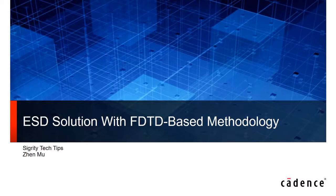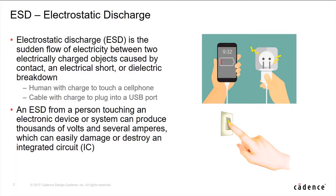Thank you, Gary. In today's presentation, we will discuss the ESD simulation solution using the FDTD methodology in Sigrity tools. What is ESD? It is electrostatic discharge. It can send sudden electricity flow through objects with electrical charges. How does it happen? A person with charges touches a cell phone, or a cable with charges is plugged into a USB port. The discharge can result in thousands of volts of voltage with several amps of current.